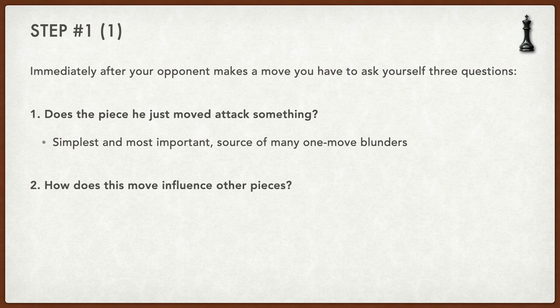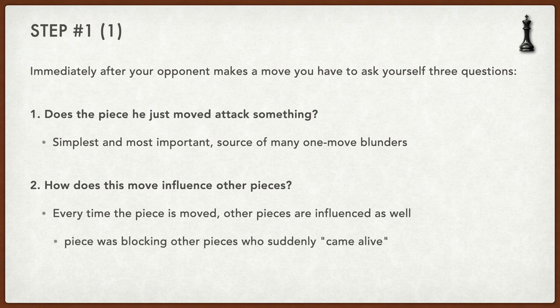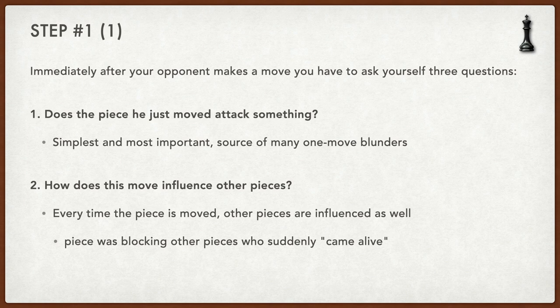The second question is: how does this move influence other pieces? We tend to forget that when your opponent makes a move, other pieces are influenced as well. For example, a piece may have been blocking some other piece, which suddenly comes alive after the move. A typical example is when you have a fianchettoed bishop on g7 and a knight on f6 blocking it — after any move by the knight, the bishop will suddenly come alive and attack something.